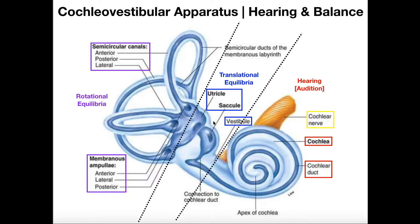Pretty much everything in here and over here on the left is going to be the vestibular apparatus. Collectively, the vestibular apparatus deals with balance and proprioception, to contrast it from the cochlea which deals with hearing. If we look on the right side, as I mentioned, this is the cochlea.